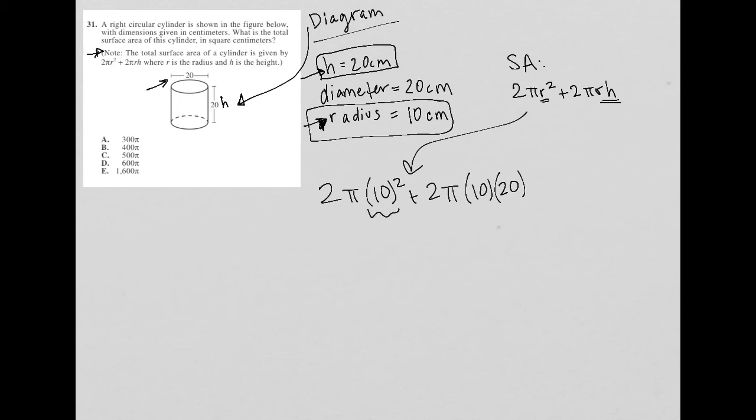To simplify this, 10 squared is 100, and 10 times 20 is 200. So 2π times 100 is 200π, plus 2π times 200 is 400π. So all together, I'm left with 600π.